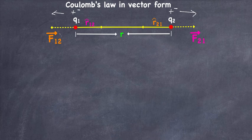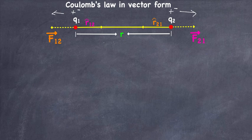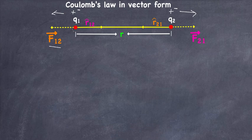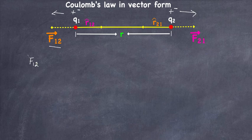We're going to find out the forces on each charge due to the other charge. Let's say we got charge q1 and q2 and they are separated by a distance r. The Coulomb's force acting on charge q1 due to charge q2 is F12, in this direction. Let me write down the equation — the force on charge 1 due to charge 2, F12.